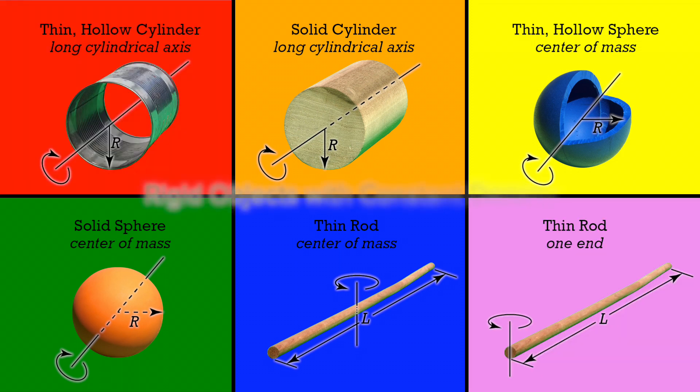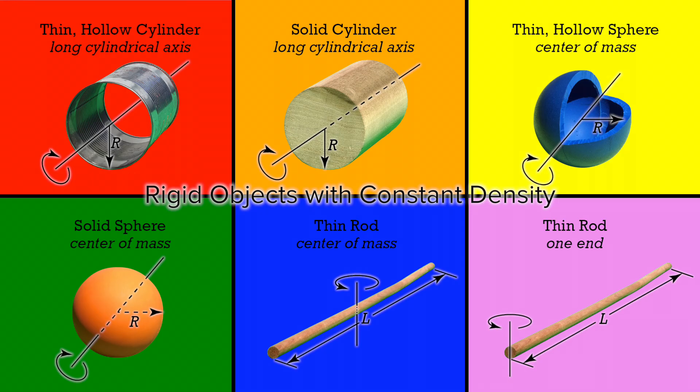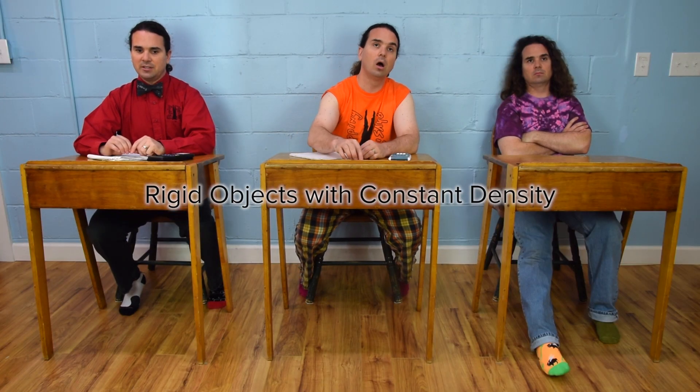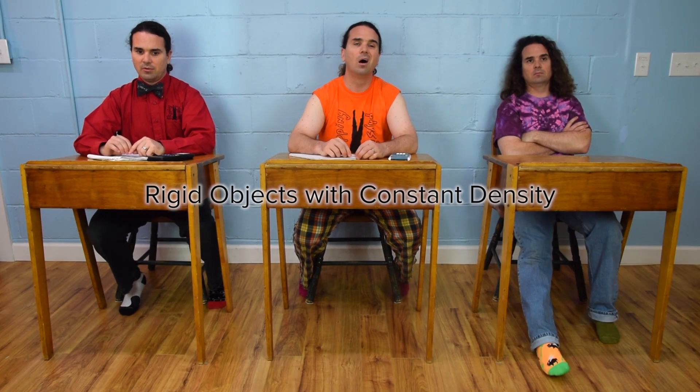These are rigid objects with constant density. Rigid means the objects will not easily change shape.